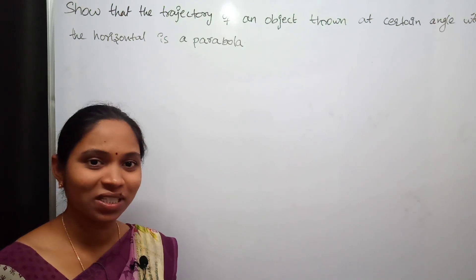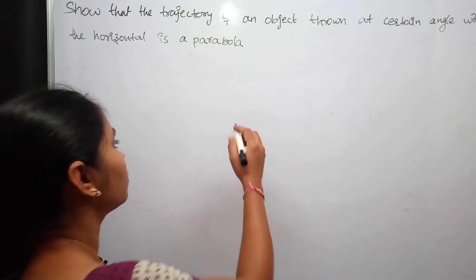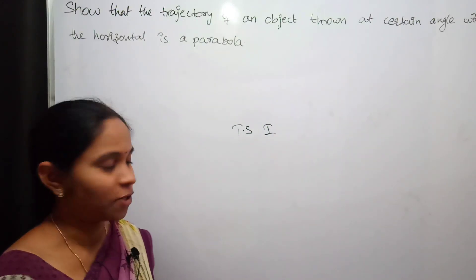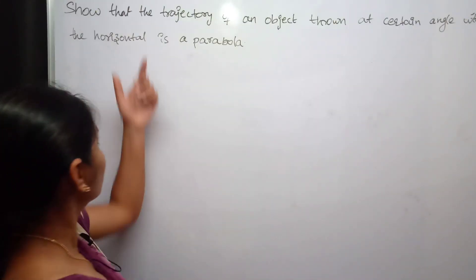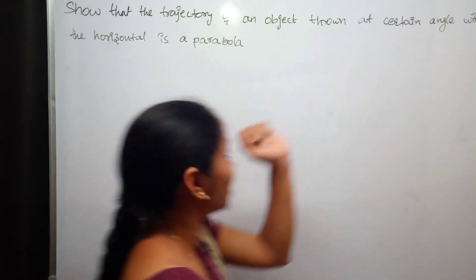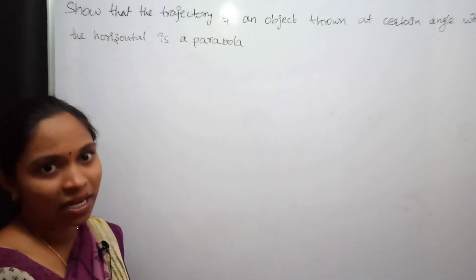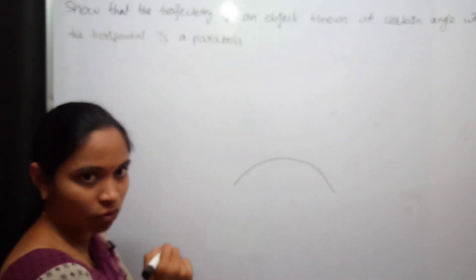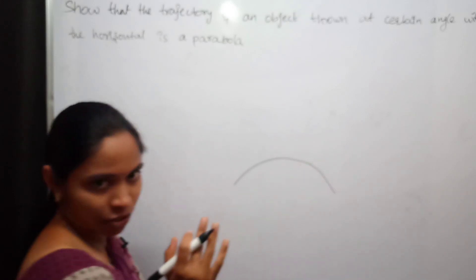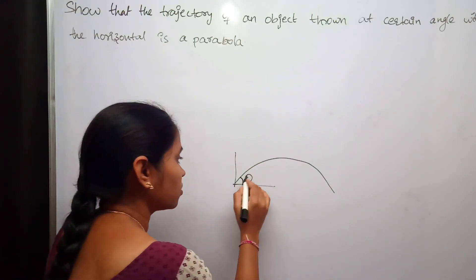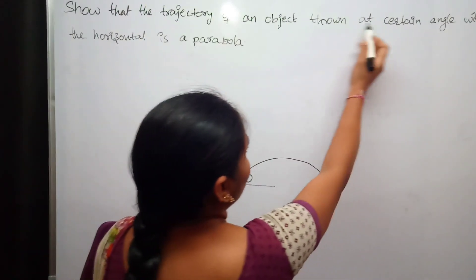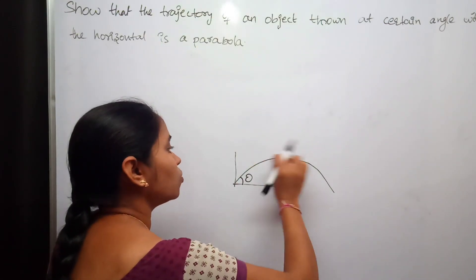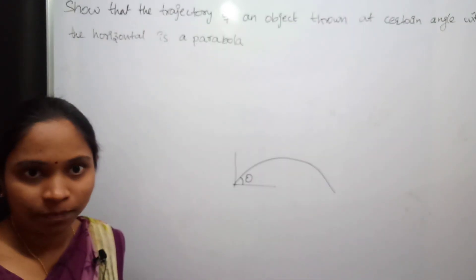Hello students, welcome to Swapna Physics Classes. In this lecture I am going to explain one more important short answer question for your Telangana State First Year Intermediate IPE examination. The question is: show that the trajectory of an object thrown at a certain angle with the horizontal is a parabola. The object thrown makes an angle theta with the horizontal.